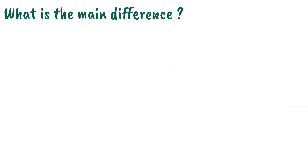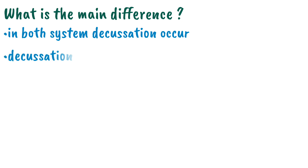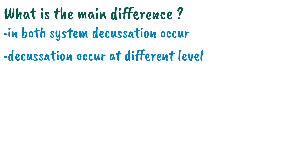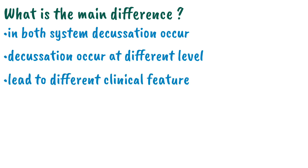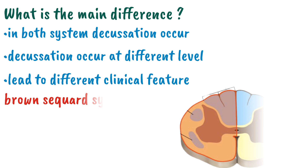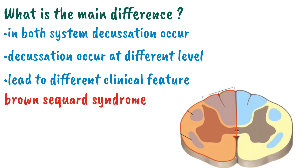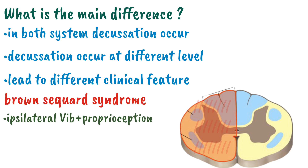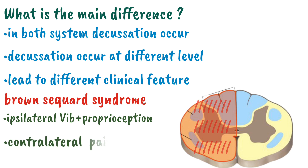The main difference between the spinothalamic and the dorsal column system is that decussation occurs in both systems, but at different levels. Due to this difference in the level of decussation, patients will present with different clinical features. For example, in Brown-Séquard syndrome — hemiparalysis or damage to half of the spinal cord — it will affect ipsilateral vibration, proprioception and fine touch, while affecting contralateral pain, temperature and touch sensation.